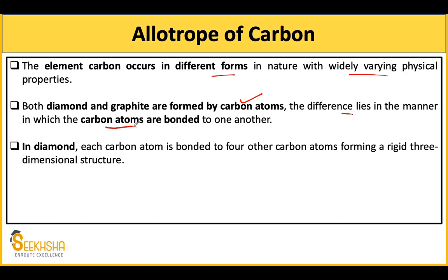In diamond, each carbon atom is bonded to four other carbon atoms, forming a rigid three-dimensional structure. I will also show you the shapes of the bonding structures of graphite, diamond, and fullerene — all three.